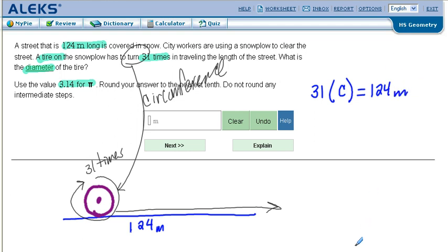We're asking for specifically the diameter. So you ask yourself, what is circumference? C equals d pi. So we're going to do 31 times d pi equals 124.